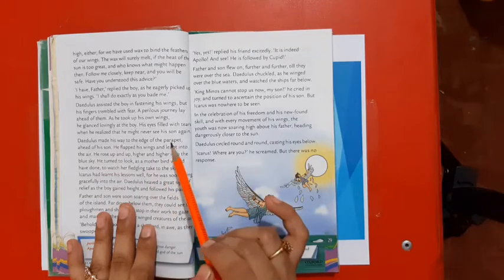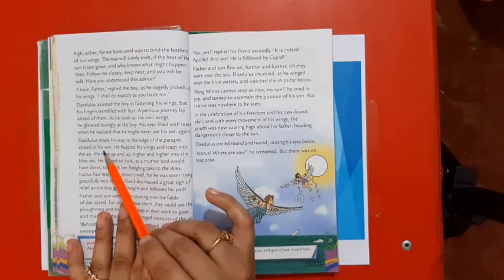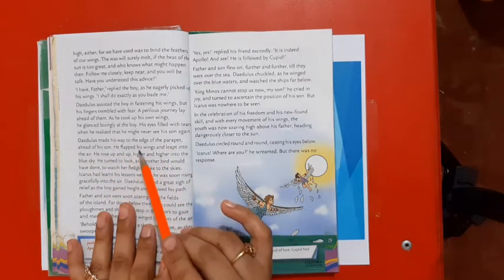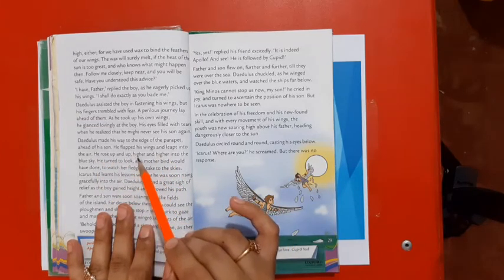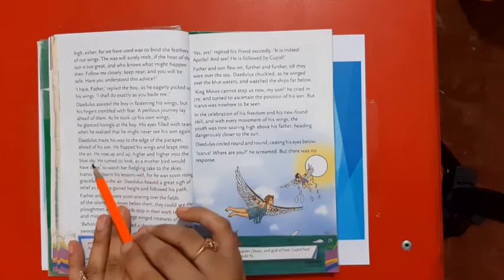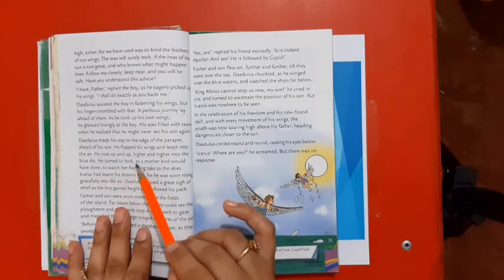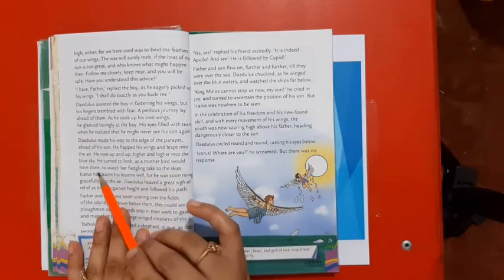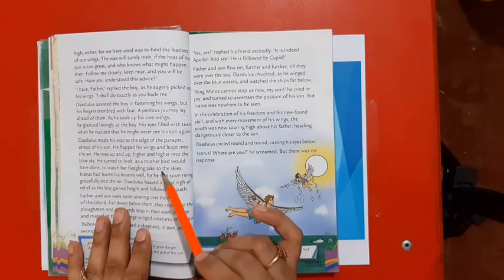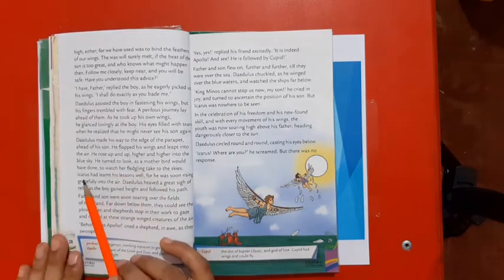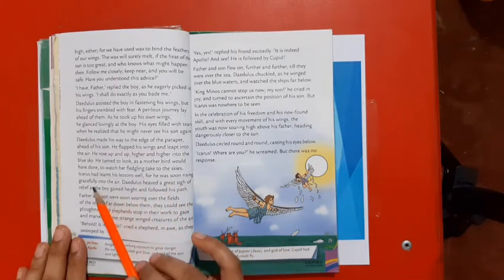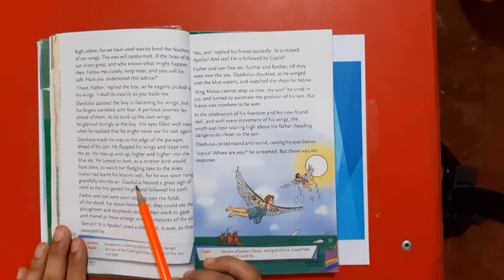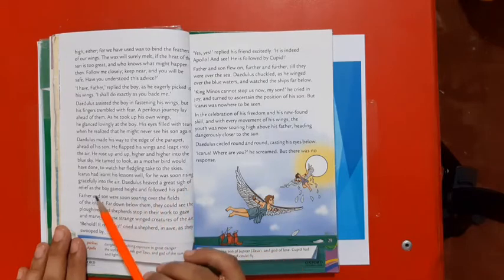Daedalus made his way to the edge of a parapet ahead of his son. He flapped his wings and leapt into the air. He rose up and up, higher and higher, into the blue sky. He turned to look as a mother bird would have done to watch her fledgling take to the skies. Icarus had learned his lesson well, for he was soon rising gracefully into the air. Daedalus heaved a great sigh of relief as the boy gained height and followed his path.